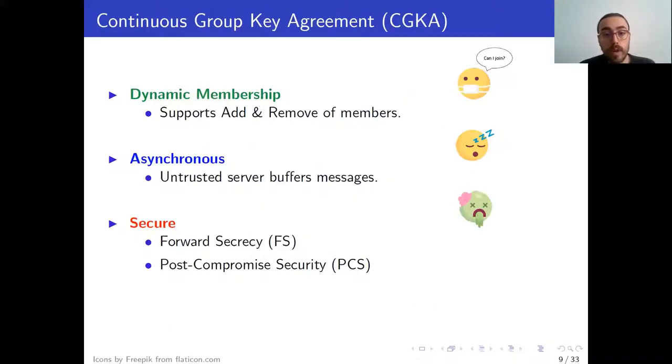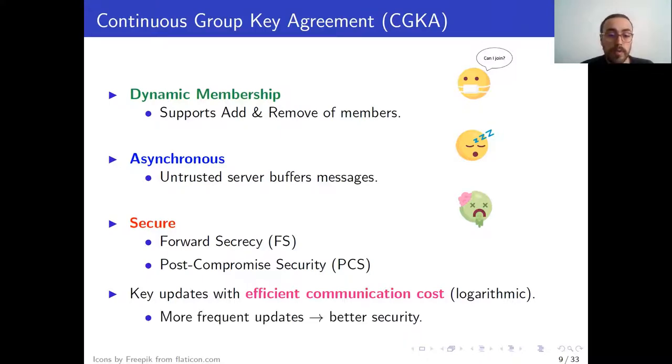So to our requirements for our continuous group key agreement, we should add a fourth one, which is that key updates can be done with efficient communication costs. And here, by efficient, we mean logarithmic. And this is particularly important because the more frequently we can update, the better security we will get.